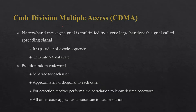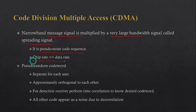So let's see how with the help of some code we can divide users into different groups. In CDMA, a narrowband message signal is multiplied by a very large bandwidth signal called a spreading signal. Basically in CDMA, the narrowband message signal will be spread using a pseudo-noise code sequence, which is random in nature. We also maintain that the chip rate should be very much greater than the data rate.